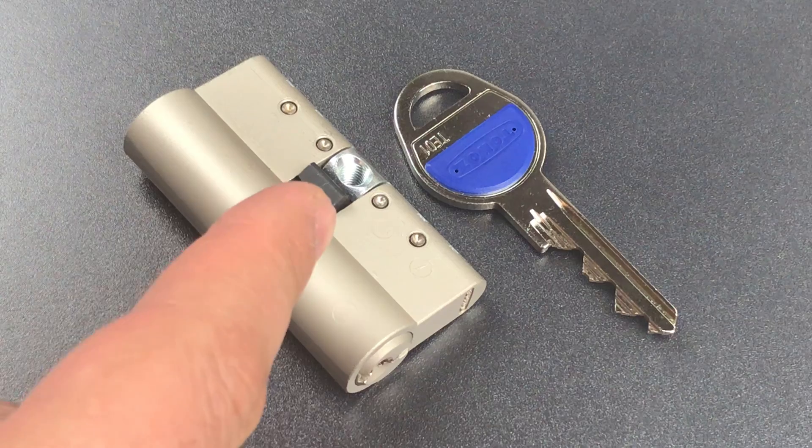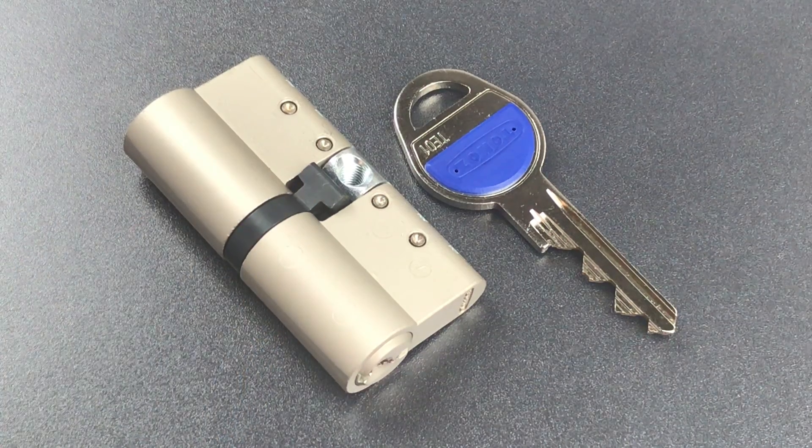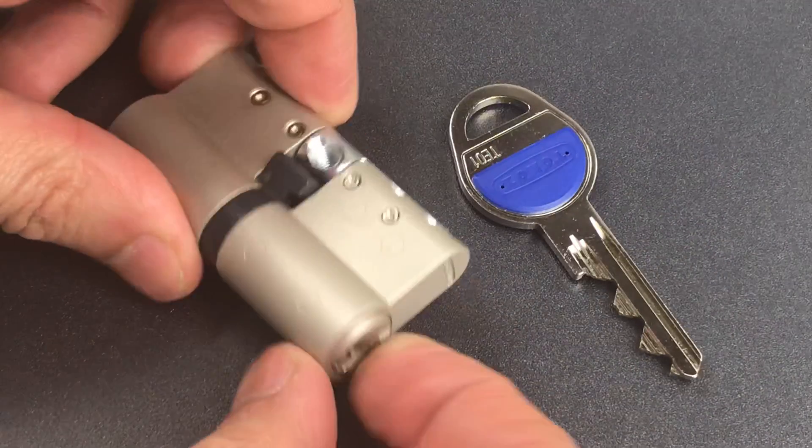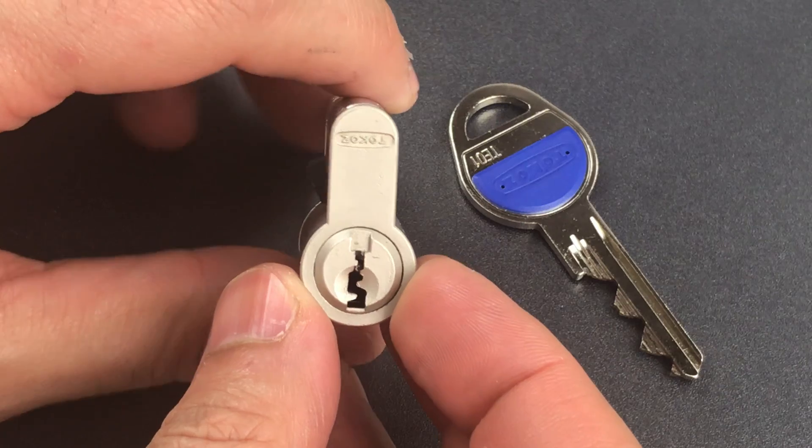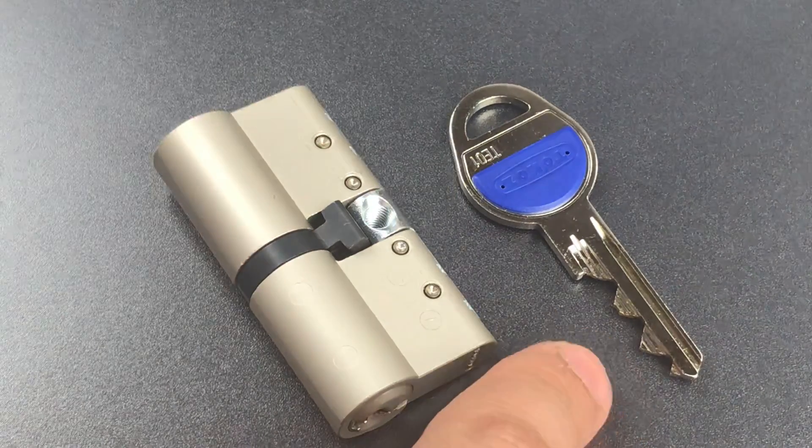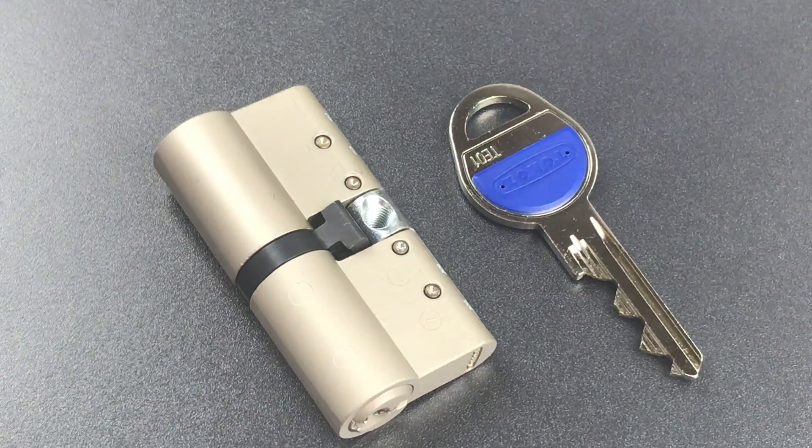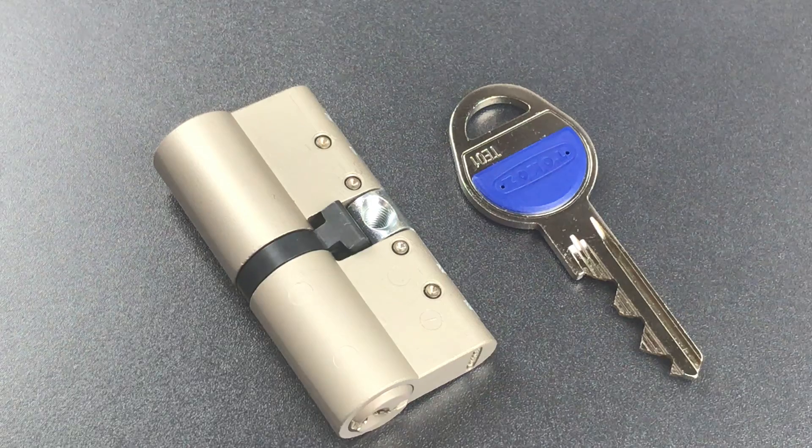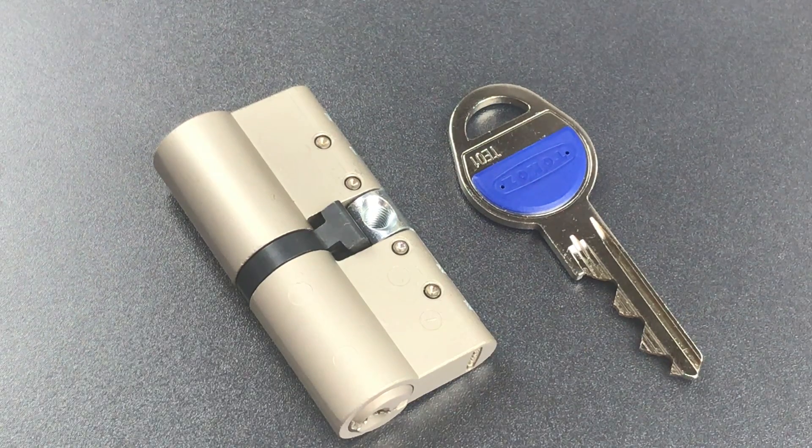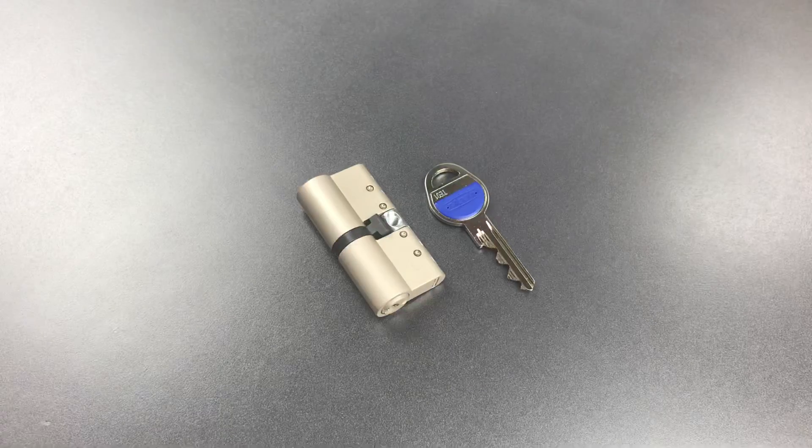However, this particular lock is a different story. It's pretty tricky because of the combination of a pretty nasty keyway and absolutely absurd bidding. So let's get this in the vise and both prove Tokos wrong and evict this lock from the Naughty Bucket.